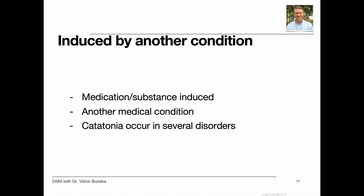Psychotic disorders may be induced by another condition. In substance or medication-induced psychotic disorder, the psychotic symptoms are judged to be a physiological consequence of a drug of abuse. In psychotic disorder due to another medical condition, the psychotic symptoms are judged to be a direct physiological consequence of that medical condition. Catatonia can occur in several disorders, including neurodevelopmental, psychotic, bipolar, depressive, and other mental disorders.